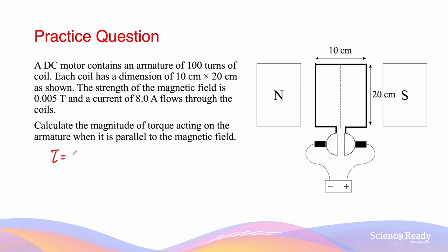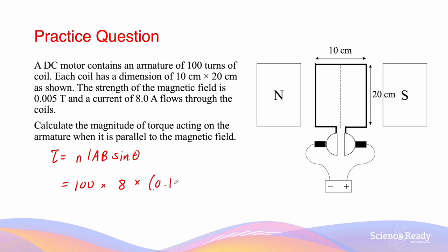Torque is given by NIAB sin theta. N is 100, I is 8 Amperes, times by the area of this rectangular coil, which is 0.1 × 0.2 metres.